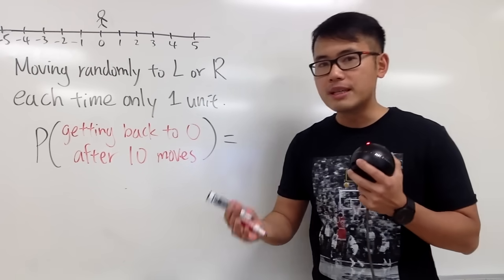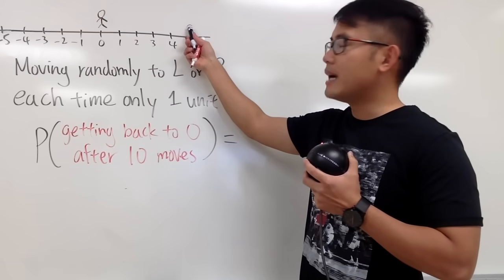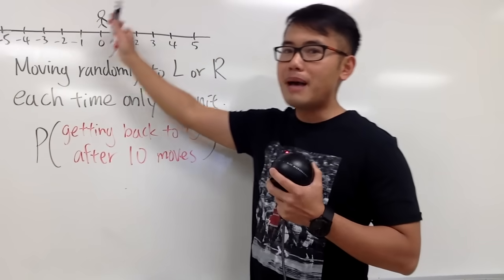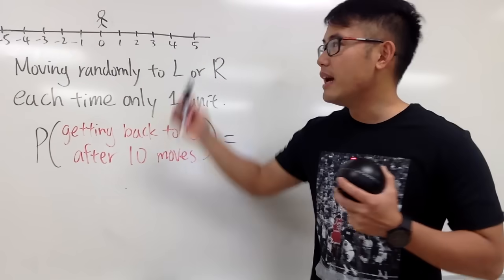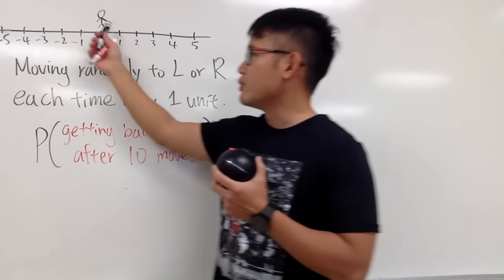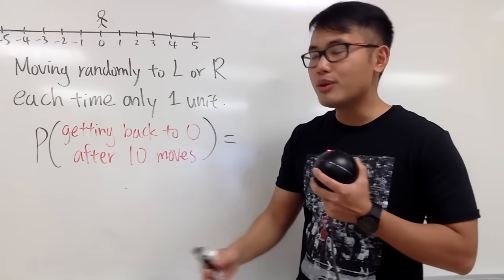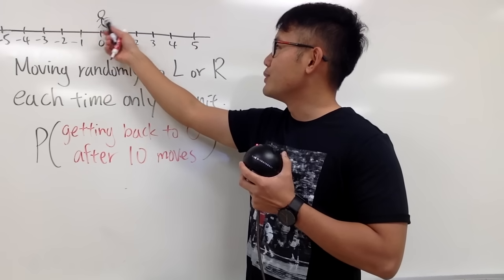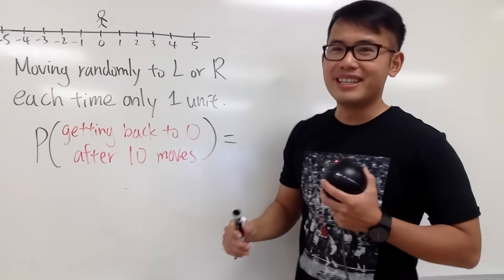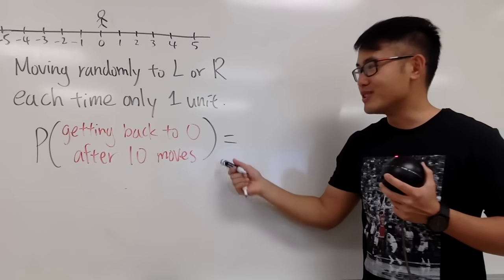For example, you can go 5 moves all the way to the right and then 5 moves back — a total of 10 moves — and you are back at 0. Of course, you can do 5 moves the other way and then 5 moves back. But you can also mix it up: 1, 2, 3, 4 moves and so on, and at the end of 10 moves, get back to 0 as well. Pause the video and try this first.